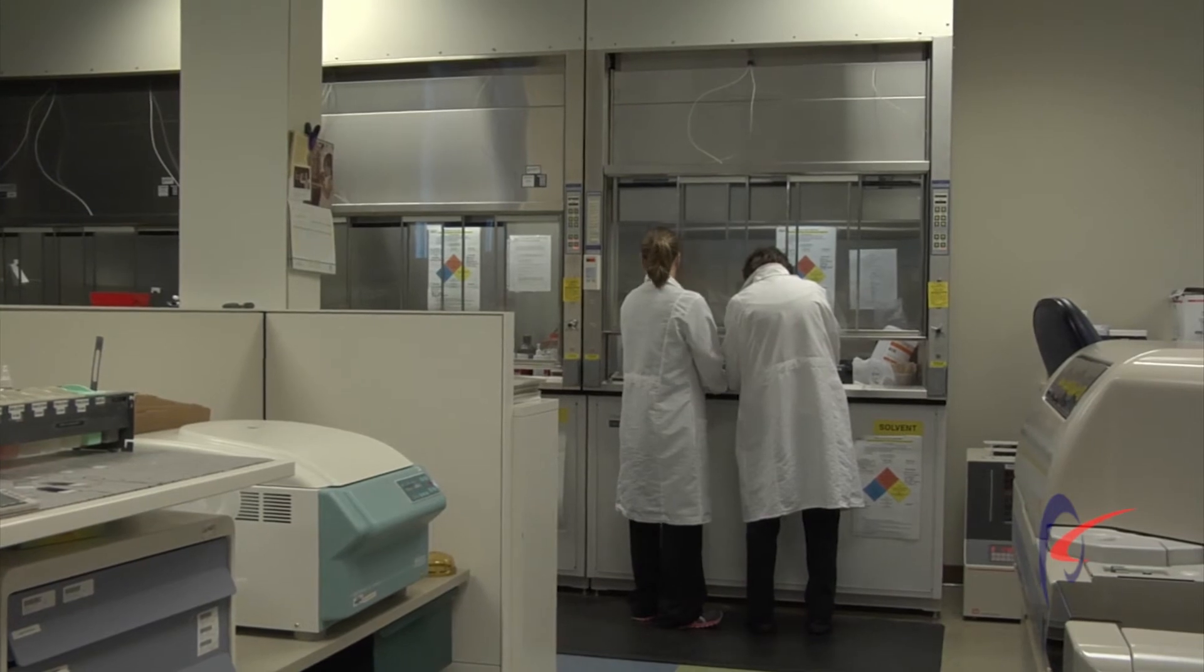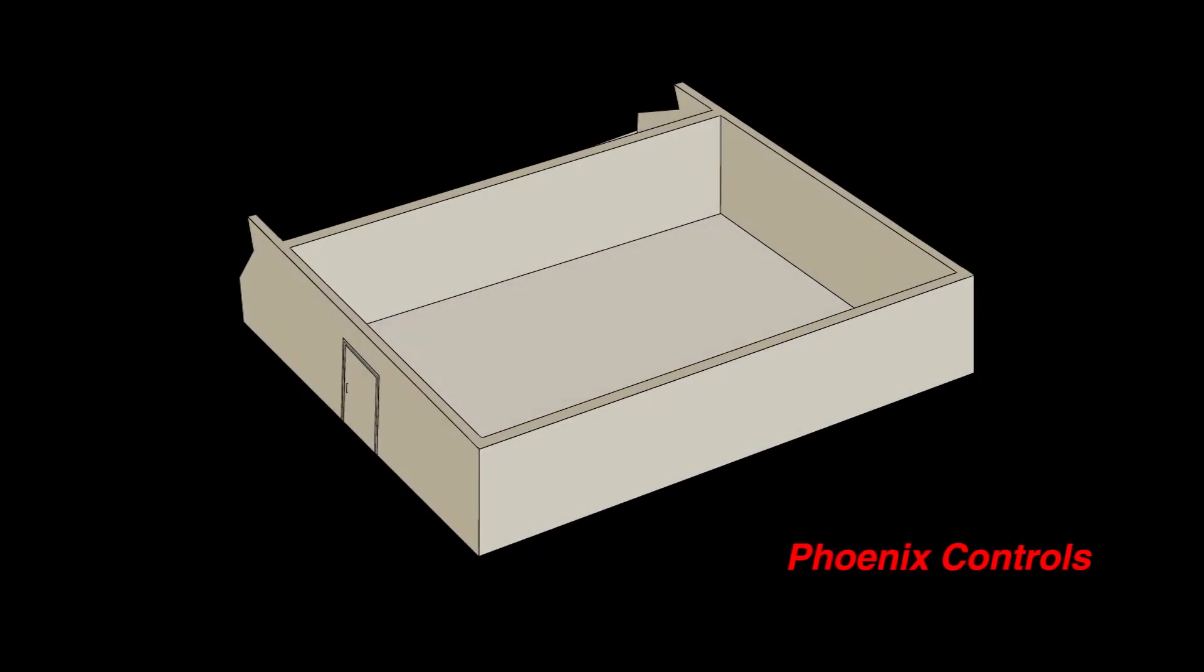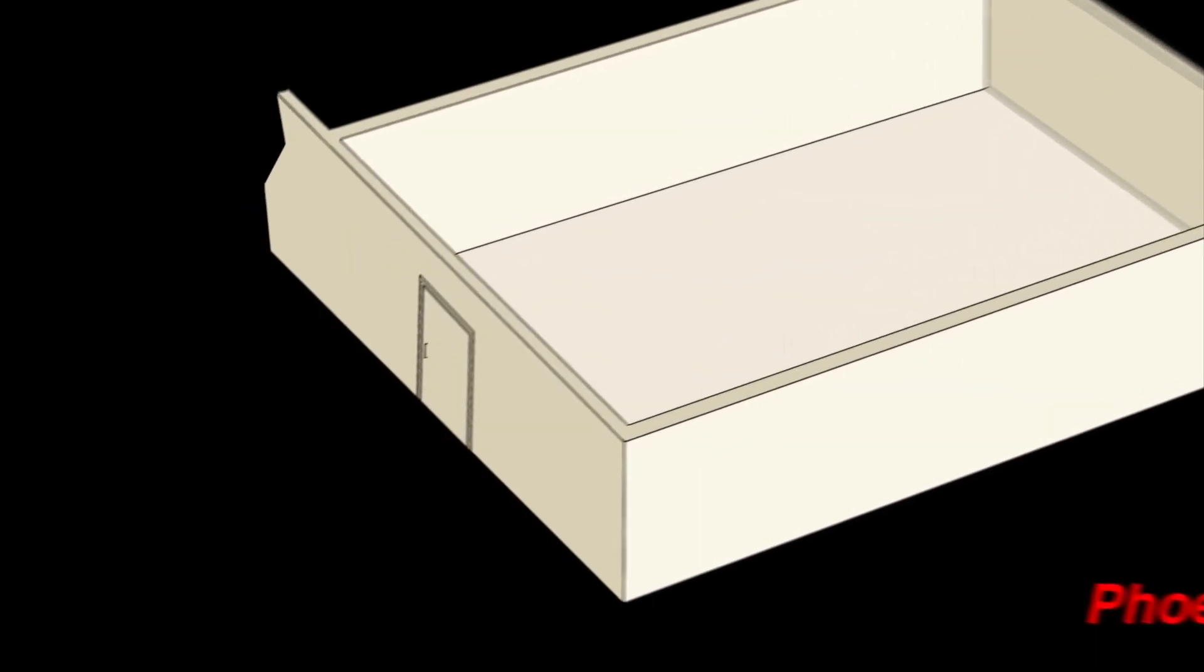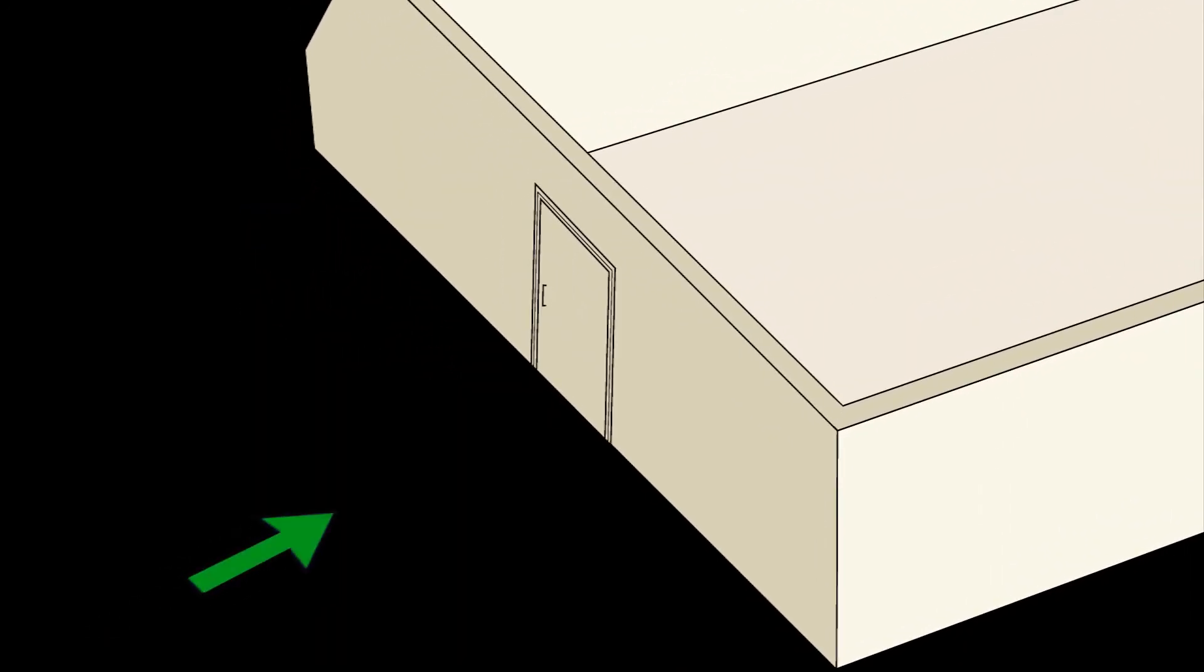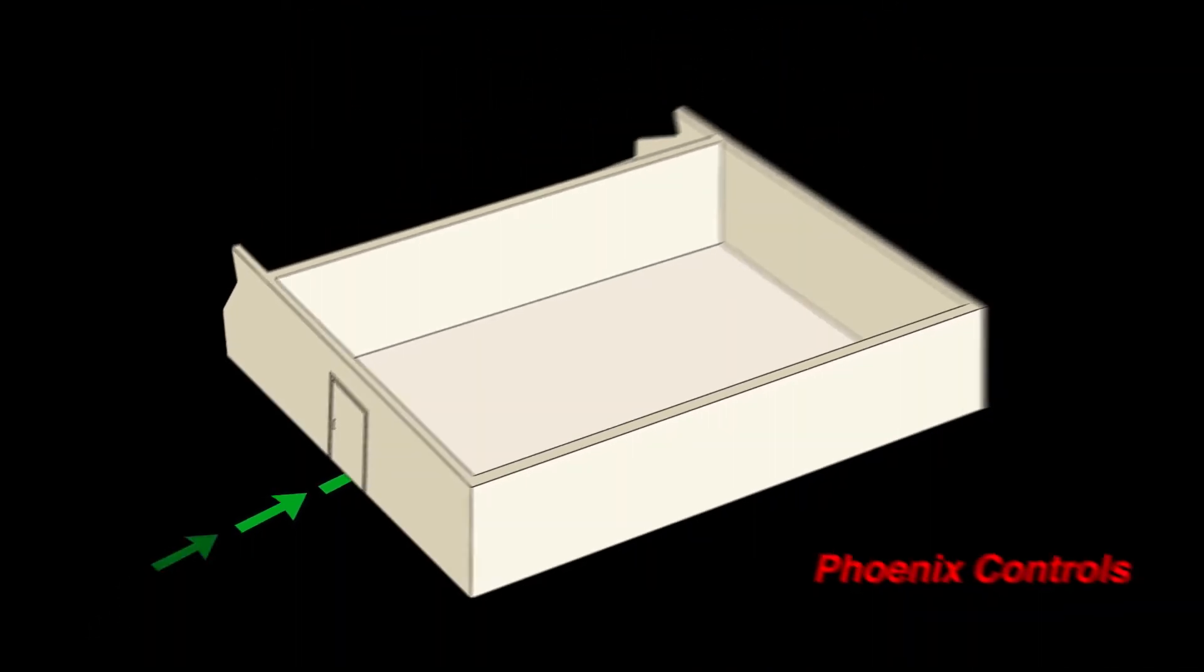After the primary containment zone, the fume hood itself is demonstrated, we'll then take it a larger step. We'll look at the laboratory itself. The lab proper, if you will, is the secondary containment zone, and so that laboratory must maintain negative pressurization in relation to the corridor or its adjacent spaces at all times.